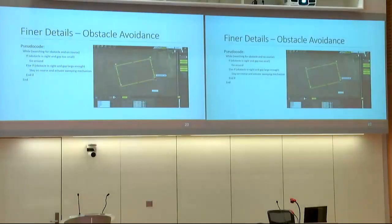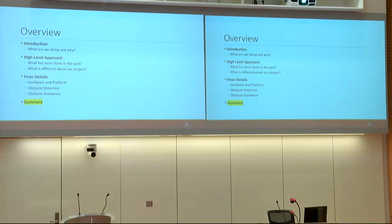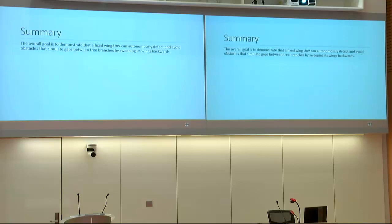Here is the obstacle avoidance algorithm shown in Mission Planner. The airplane flies its rectangular course with four waypoints plotted. If it sees an obstacle with a gap too small, it plots a new waypoint, creates a new trajectory, goes around, and gets back on trajectory. But if the gap is large enough, it retracts its wings, flies through — and that's what we want to demonstrate: the aircraft reacting in real time on the table, showing its wings retract backwards and the ailerons moving.